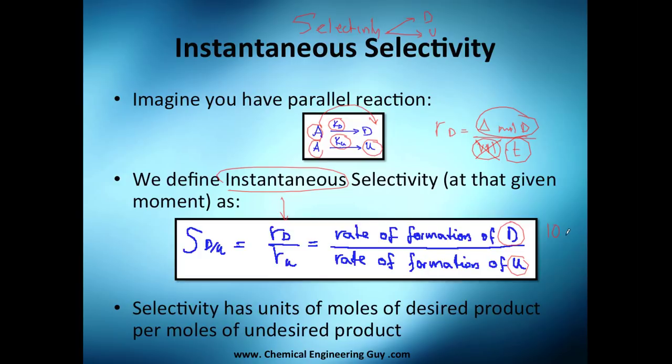If you're producing 10 moles of D but at the same time producing 2 moles of the undesired product, you'll have an instantaneous selectivity of 5. Just to remind you, this has units of moles of the desired product divided by moles of undesired product. Moles and moles will cancel, but we're talking specifically about moles of desired product versus moles of undesired product.